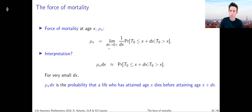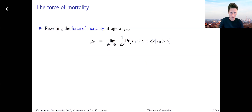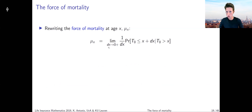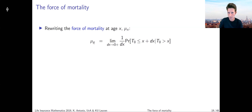It's a probability divided by the length of the interval over which we consider this probability, taking the limit as the length goes to zero. This is a very important concept. If you look at econometric models built to generate future scenarios for mortality, these models are usually calibrated and specified at the level of the force of mortality — so it's a very crucial concept in the econometrics of human mortality data.